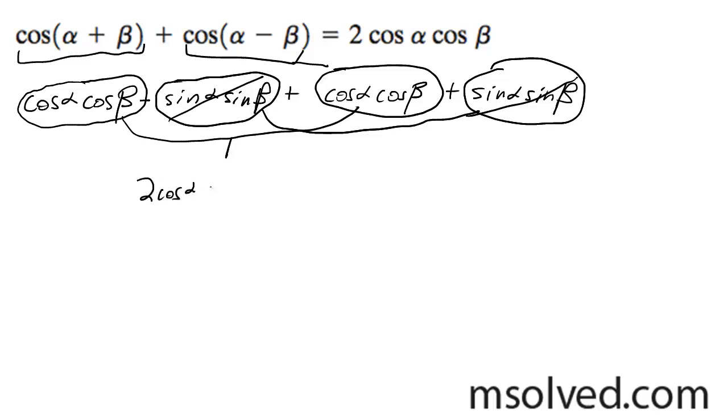Add these two together, I get cosine alpha, cosine beta, which is what I was looking for in the first place.